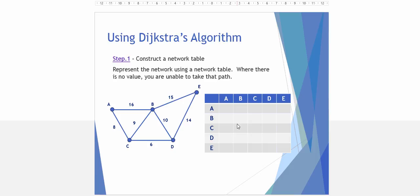So if we were to do this using Dijkstra's algorithm, we need to construct a network table. You can see we have A, B, C, D, E, the five different vertices at the top of our table in columns and A, B, C, D, E along the side in our rows. Let's look at the steps used to perform Dijkstra's algorithm.